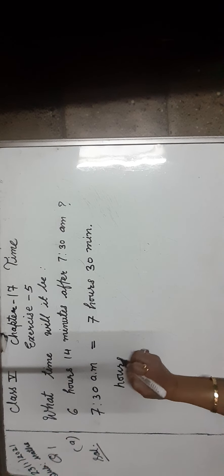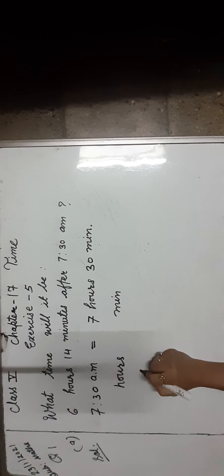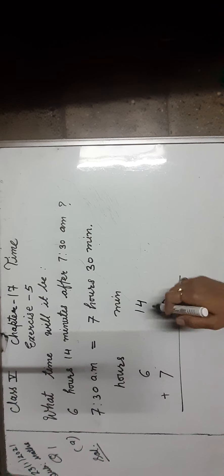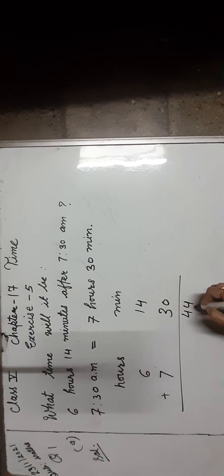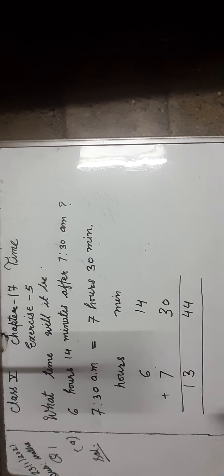We write hours and minutes. Write the hours value and minutes value: 6 hours 14 minutes, and 7 hours 30 minutes. Let us add. Start from the minutes column: 14 plus 30 is equal to 44 minutes. We write 44 under the minutes column. Now add hours: 6 plus 7 is equal to 13 hours. We write 13 under the hours column. Thus, the required time is 13:44 hours or 1:44 pm.